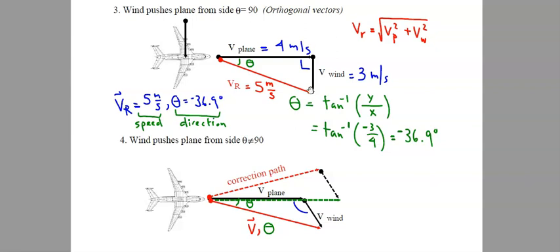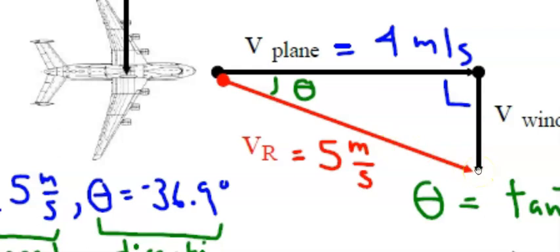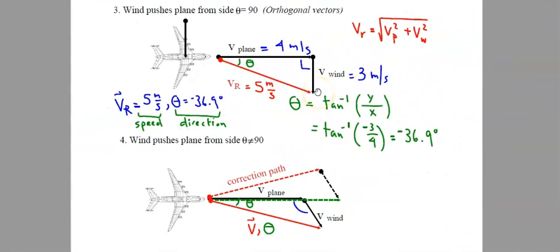I chose very simple numbers so the Pythagorean theorem would be easy to calculate. The plane is moving to the right at four meters per second and the wind is blowing south. I connect the vectors head to tail — the tail of the first points directly to the head of the last. This red vector replaces the two black vectors of the plane's velocity and the wind's velocity. Using the Pythagorean theorem, three squared plus four squared equals five, so the resultant speed is five meters per second.